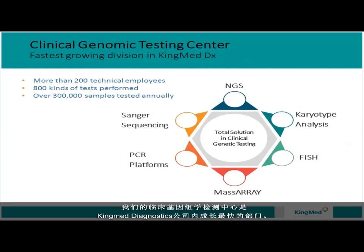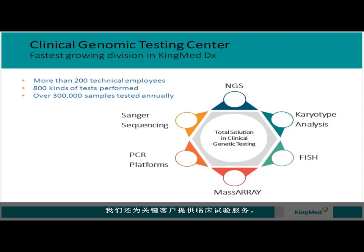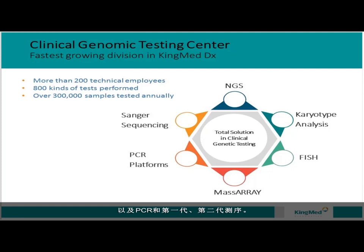Our clinical genomic testing center is the fastest growing division in KingMed Diagnostic. Our center has over 200 staff, including technical and medical. We provide more than 1,000 different tests including cancer and non-cancer for our hospital and clinic clients, as well as clinical trials for pharmaceutical clients. Last year we tested more than 600,000 samples. We have integrated technology platforms in our core lab, including traditional genotyping and FISH, array including MassArray, PCR, first-generation sequencing, and next-generation sequencing.